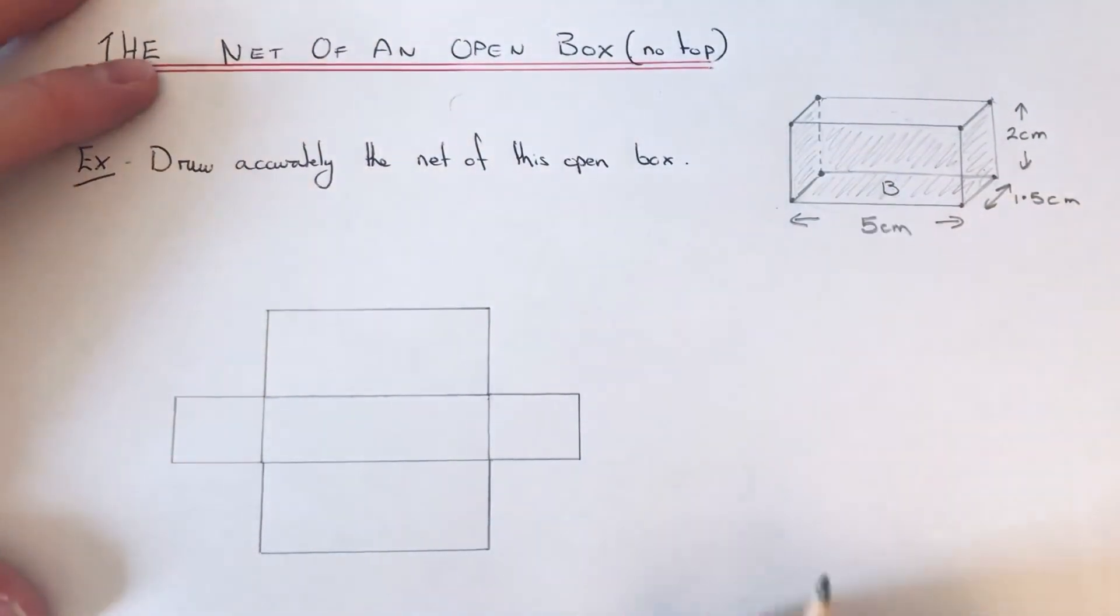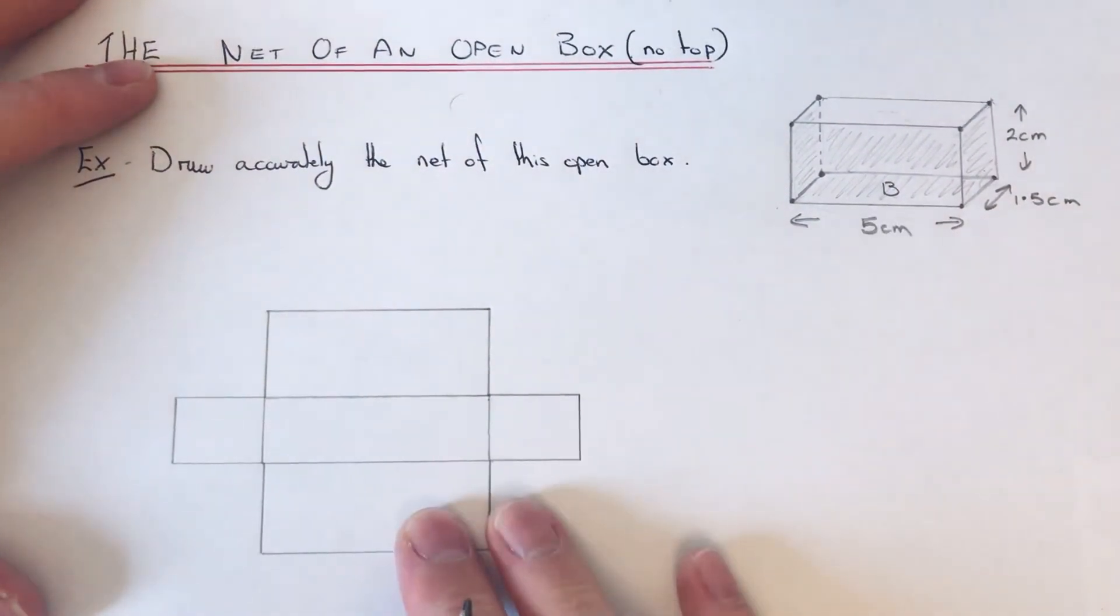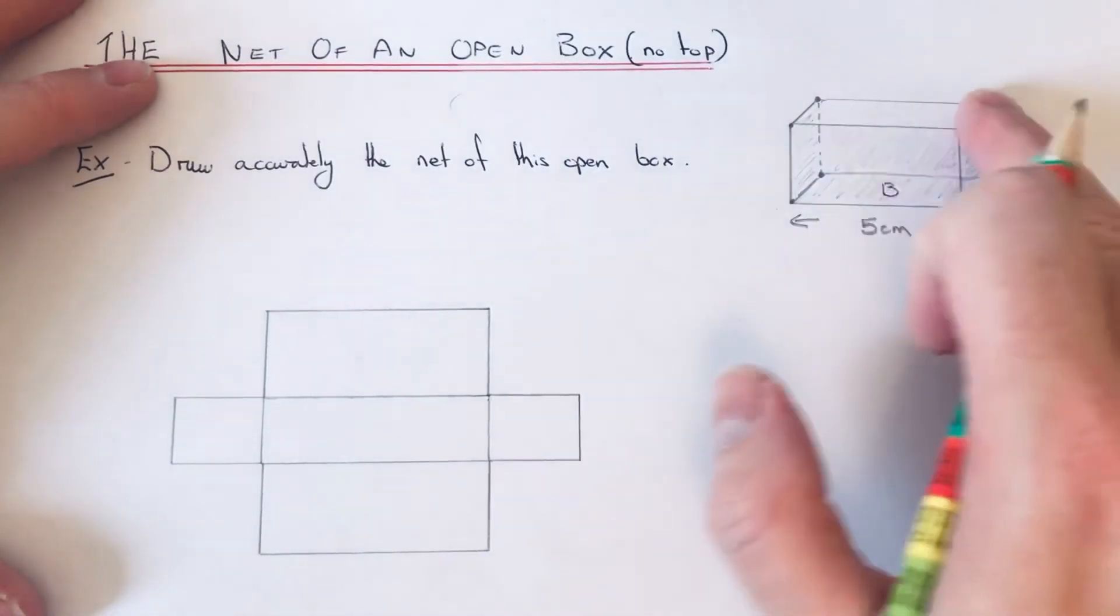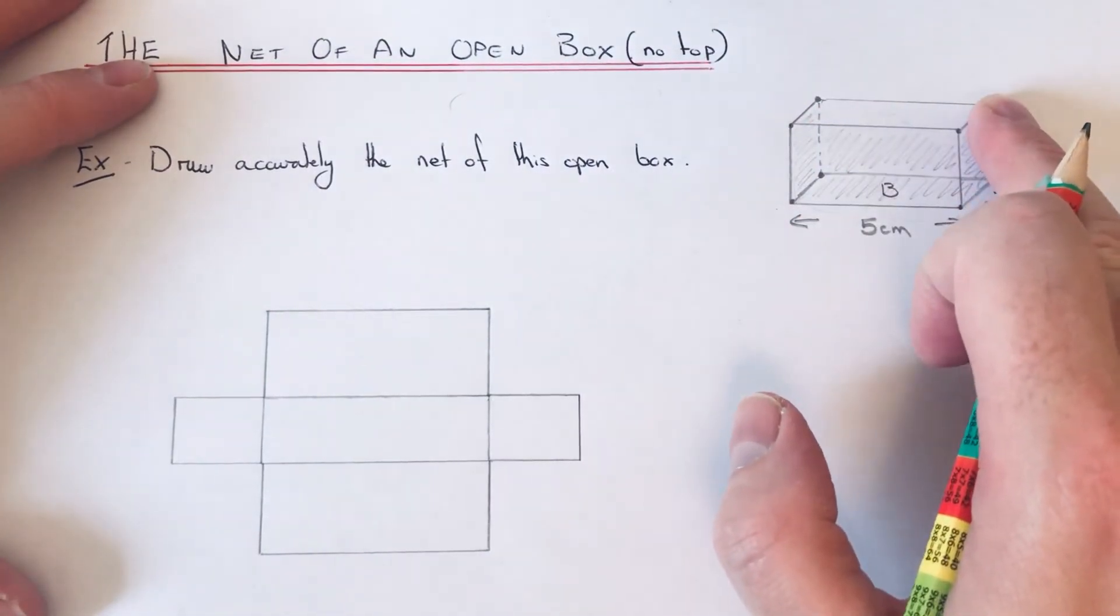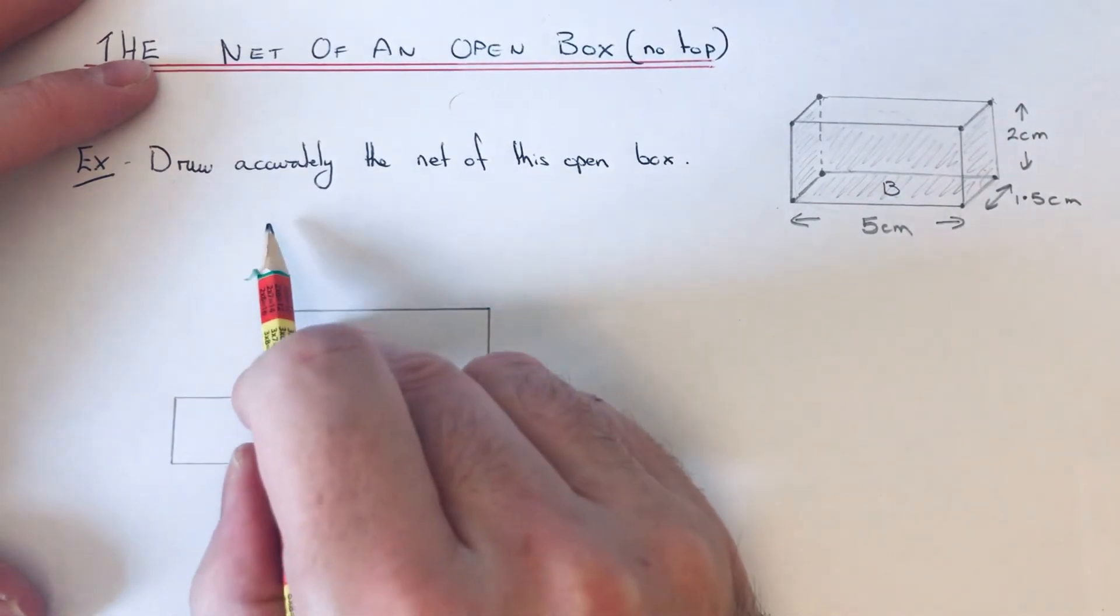And that's all there is to it. We've got our five faces now. We don't need to do another face because there's no top on the box. If you did have a top, then you would put the top here or you can do it underneath.